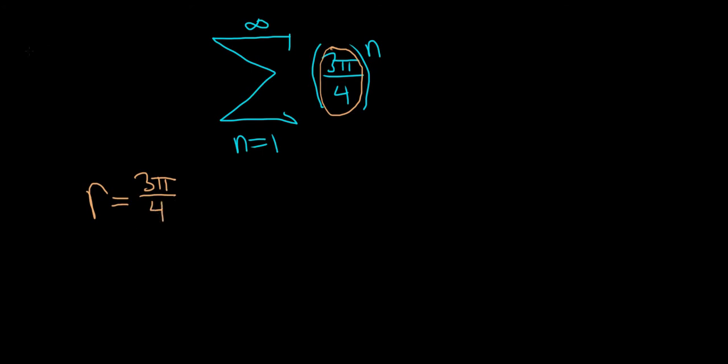The geometric series test says that if r is less than one in absolute value we have convergence, and if r is greater than or equal to one in absolute value we have divergence. Here nothing is negative so we don't really need the absolute value.